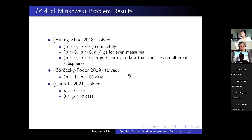In 2019, Braski and Folder solved the P > 1, Q > 0 case completely, removing the even measure assumption from Huang and Zhao and also the P ≠ Q condition. Then Chen and Li in 2021 used PDEs to completely solve the P > 0 half-plane case, and also provided a complete solution for the region P between 0 and Q.